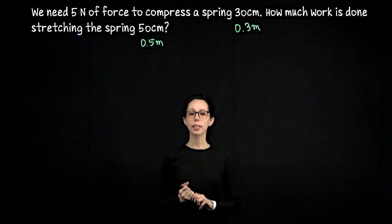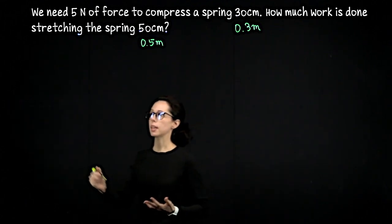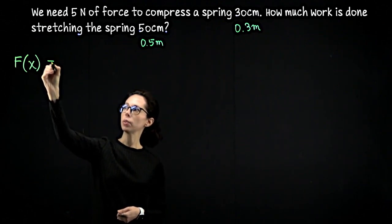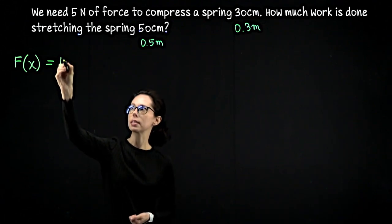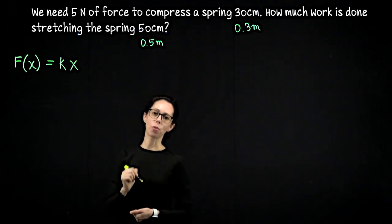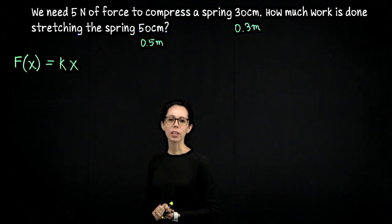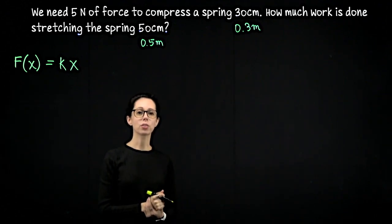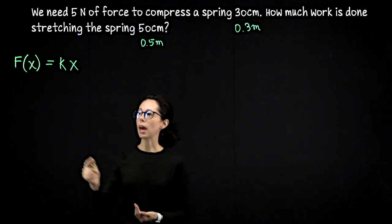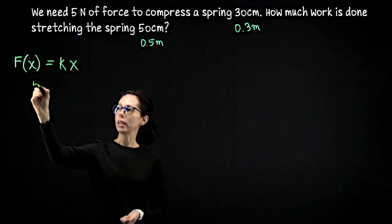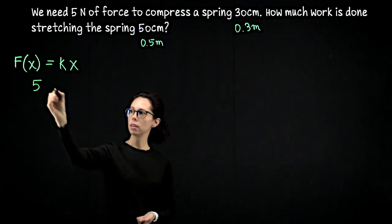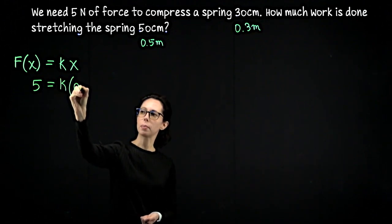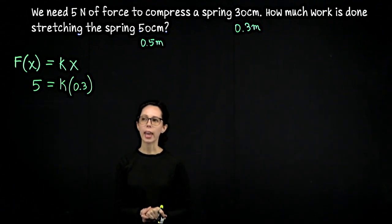Let's take that first sentence and write down an equation for it using Hooke's Law. Hooke's Law tells us that the force we need to displace our spring by x meters is equal to the spring constant k times that amount of displacement. So force is k times x. We're given two of the values in this equation, and we can solve for the third. In particular, we know that we need 5 newtons of force, and that context is when we displace our spring by 0.3 meters.